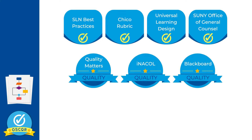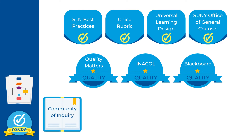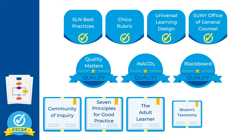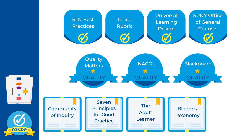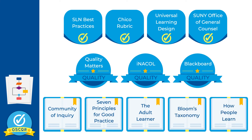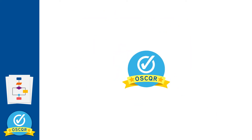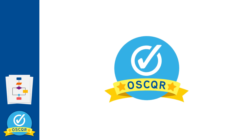The resulting 50 standards in the rubric target online instructional design and incorporate the community of inquiry model, the seven principles of good practice in undergraduate education, the adult learner, Bloom's taxonomy, how people learn, and has been mapped to the SUNY Online fundamental and core competencies for online course design.